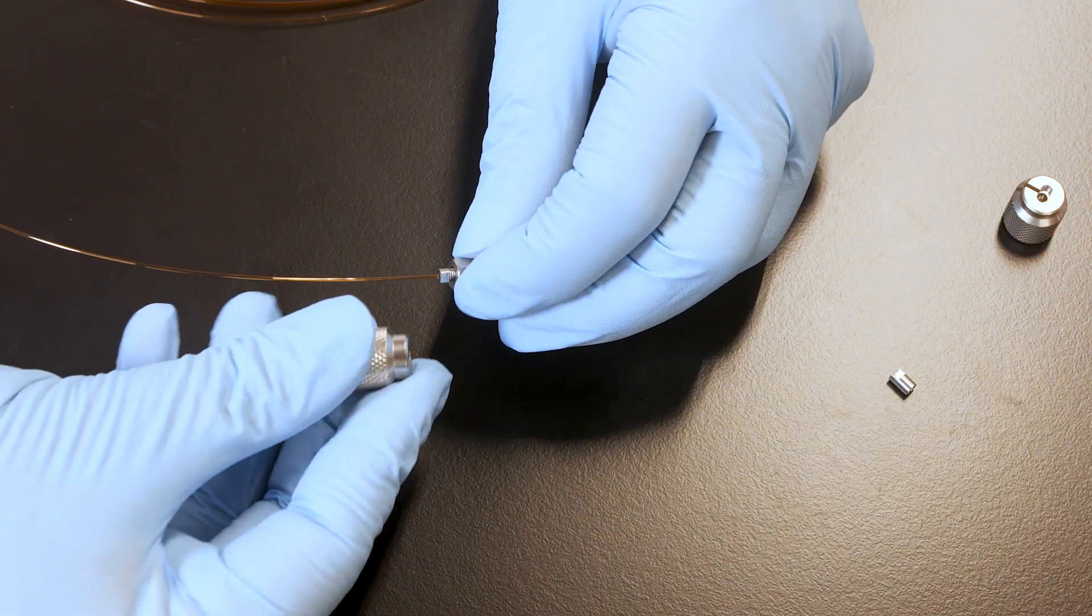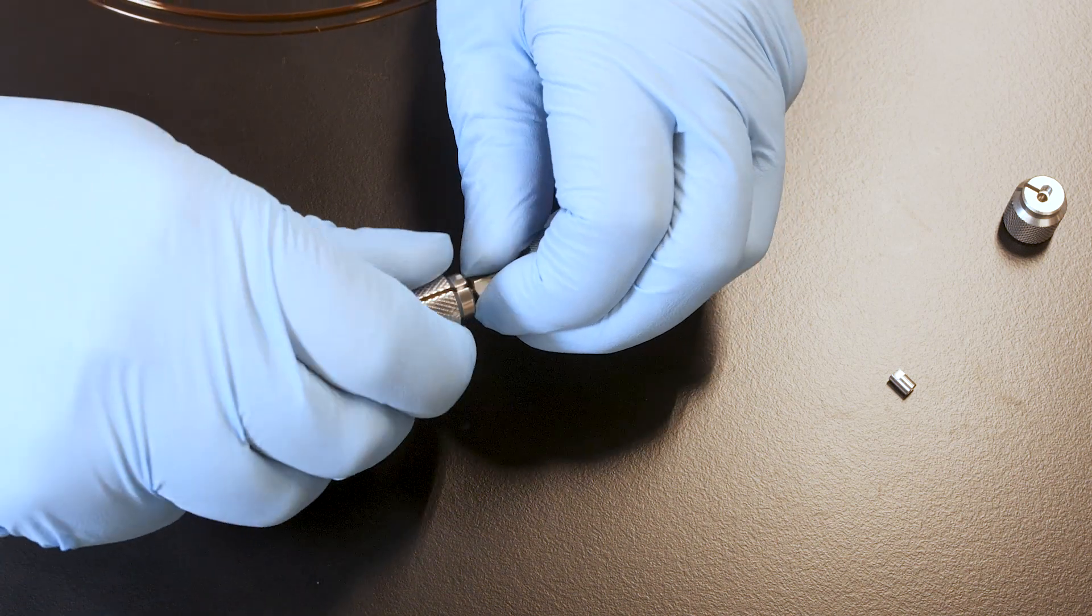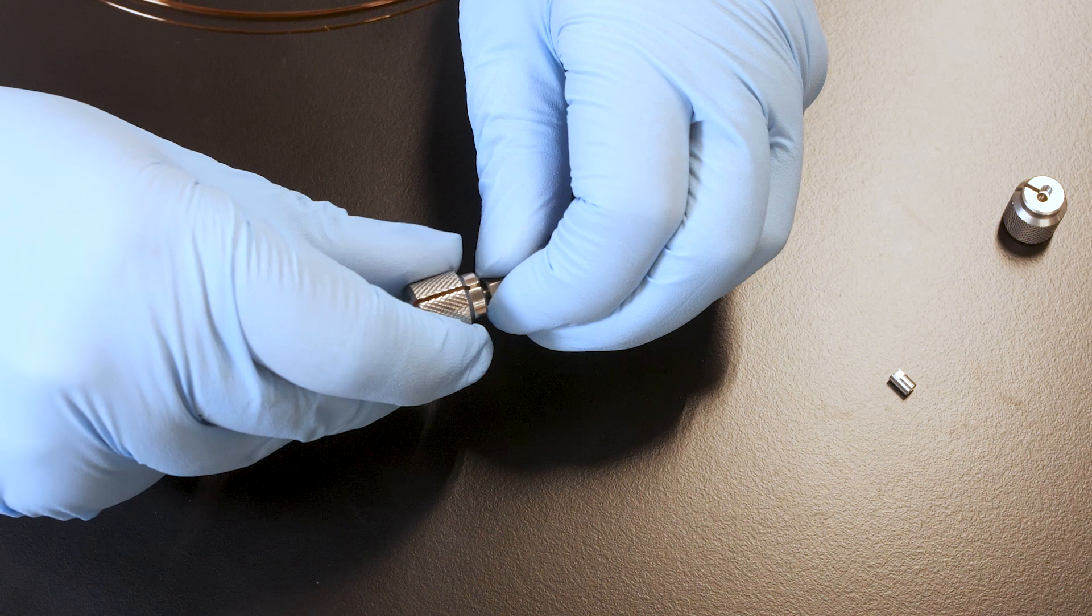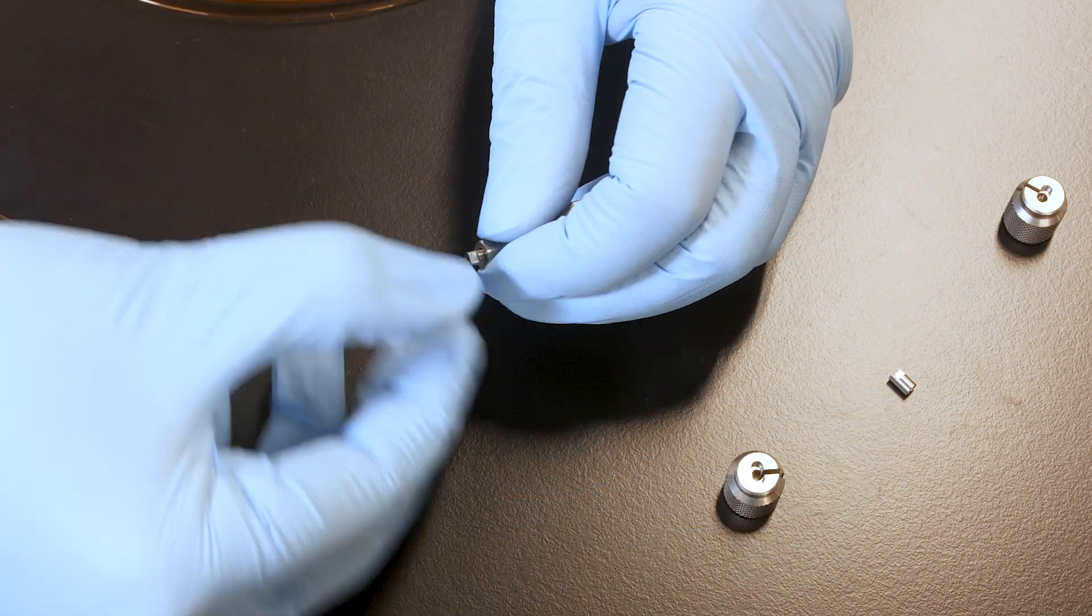Make sure the column is seated inside the ferrule before finger tightening the end fitting. Then, slide the end fitting tool onto the column and place it on the male micro connector end fitting. Swage the ferrule by gradually tightening the male micro connector end fitting until the ferrule just begins to hold onto the column.